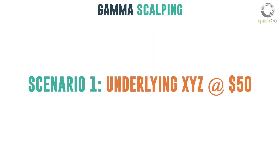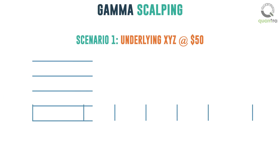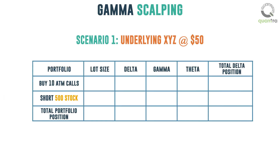Scenario 1: When the underlying stock XYZ is at $50, you buy 10 ATM calls of XYZ at 0.5 Delta, 0.1 Gamma, and minus 0.12 Theta. The total Delta of this position is plus 500. To Delta hedge this, you short 500 shares of XYZ stock at $50. The total Delta of this short position is minus 500.